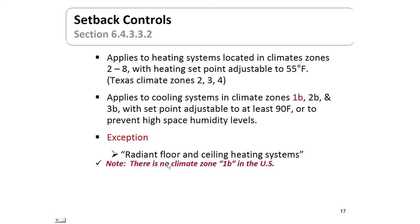Setback controls allow you to set back the temperature at night when you don't need as much heating or cooling. This applies to heating systems in climate zones two through eight, and those set points have to be adjustable to 55 degrees Fahrenheit or less. On the cooling side, this applies to climate zones 1B, 2B, and 3B, where the set point has to be at least 90 degrees — including to prevent high space humidity levels. The exception is radiant floor and ceiling systems. Note that there is no climate zone 1B in the United States.